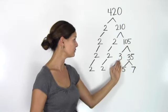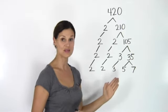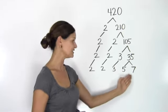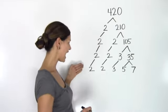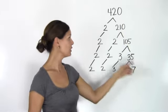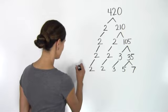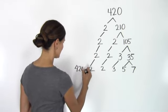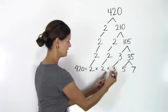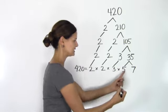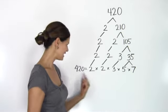105 can further be broken down to 3 times 35. And 35 can be further broken down to 5 times 7. So at this furthest point here, we have a set of prime numbers which makes up the number 420. So I can write 420 equals 2 times 2 times 3 times 5 times 7, a set of prime numbers.